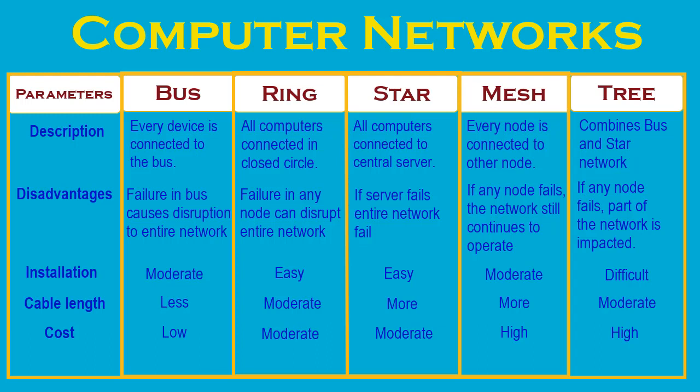Network performance in bus and ring is moderate as messages are broadcasted, and speed slows as more nodes are added. Network performance in star and mesh is high, though it does get impacted as the network grows bigger. In tree topology, performance is average due to possible traffic congestion. That brings us to the end of this computer networks video. In our next video, we will look at different devices and protocols needed to set up a computer network.